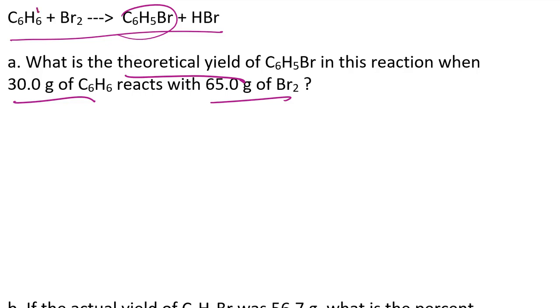And so what I'm going to need to do is I'm going to need to compare how much product I would form from both of these amounts of reagents and decide which one's a limiting reagent, and then proceed from there. So I'll start with the 30 grams of benzene, I'm going to convert that to moles, and the molar mass of benzene is actually 78.11. I'll leave that for you to verify using your periodic tables.